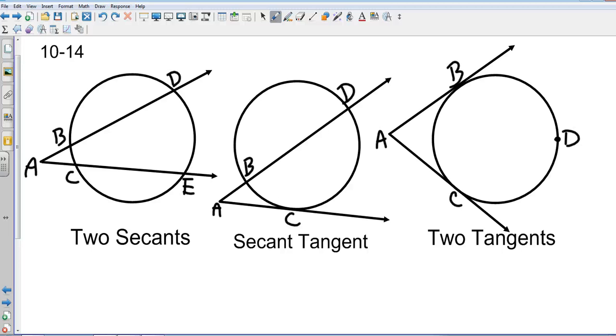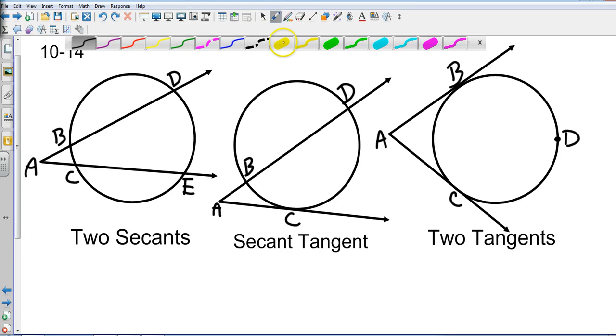Okay, so let's take a look at the first example. We're going to use angle A, and angle A is going to be found by taking its larger intersected arc and its smaller intersected arc, and taking half of it. So angle A will be equal to one-half of the larger arc minus the smaller arc, and that's when you have two secants.